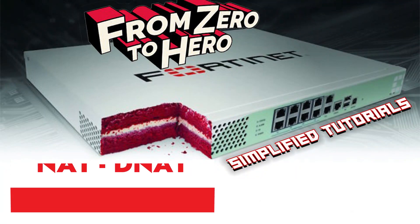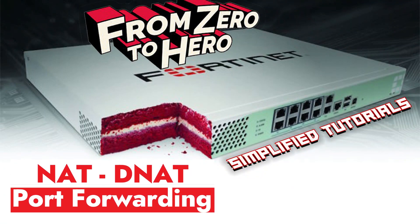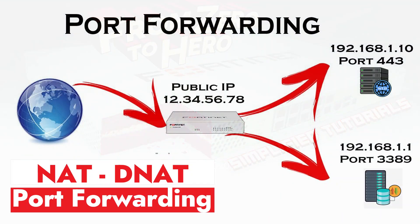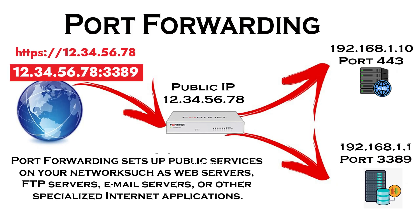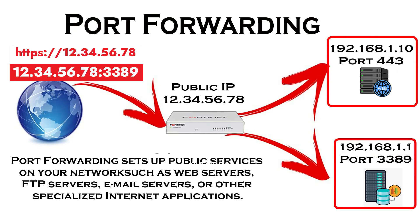Hi guys, this is DeGoroTech. Today I will show you how to configure port forwarding on FortiGate Firewall, also known as Destination NAT or DNAT. Port forwarding sets up public services on your network such as web servers, FTP servers, email servers, or other specialized internet applications. When users send this type of request to your network via the internet, the FortiGate Firewall will forward these requests to the appropriate computer or device.